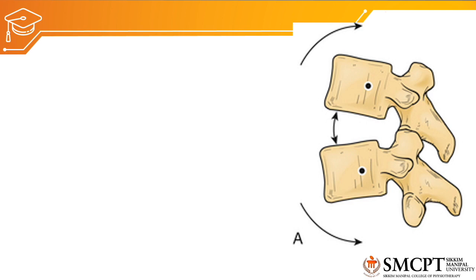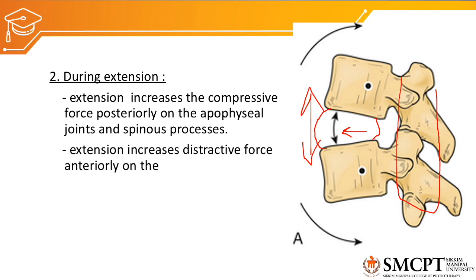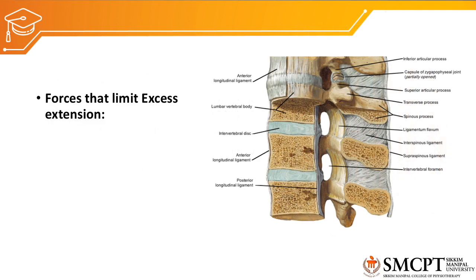Now, coming to compressive and destructive forces during extension. During extension, the compressive loading is on the posterior aspect of the vertebra — the pillars and spinous processes — whereas there will be a destructive force anteriorly, separating the vertebral bodies from each other and creating more space for the intervertebral disc to shift anteriorly. Excessive extension is limited by the anterior longitudinal ligament, situated anterior to the vertebral body, as well as by the approximation of the spinous processes.